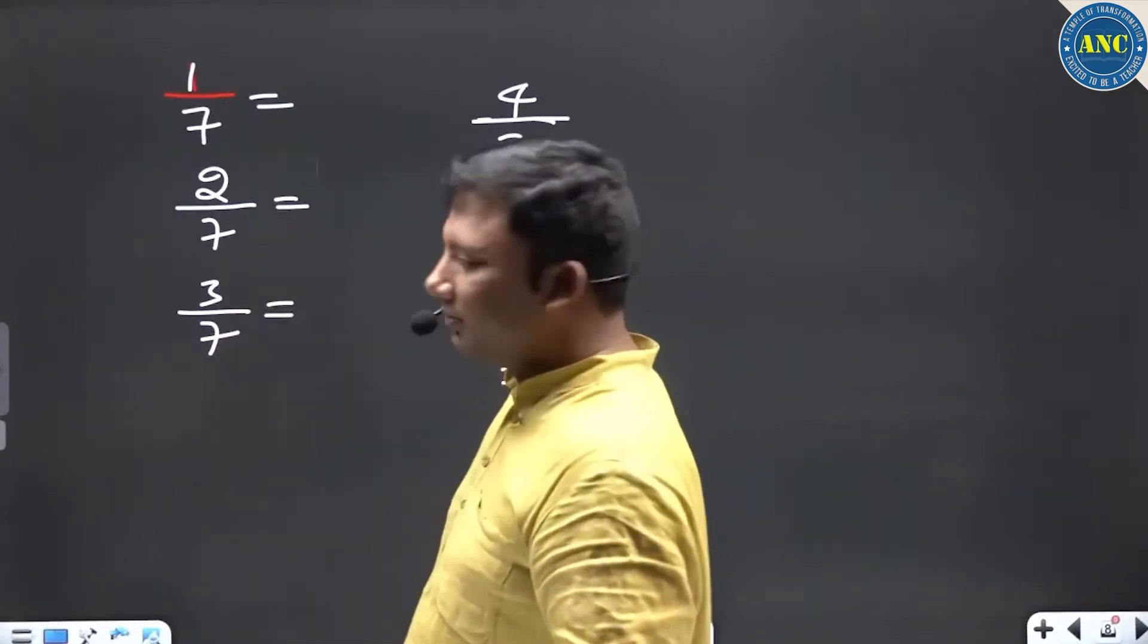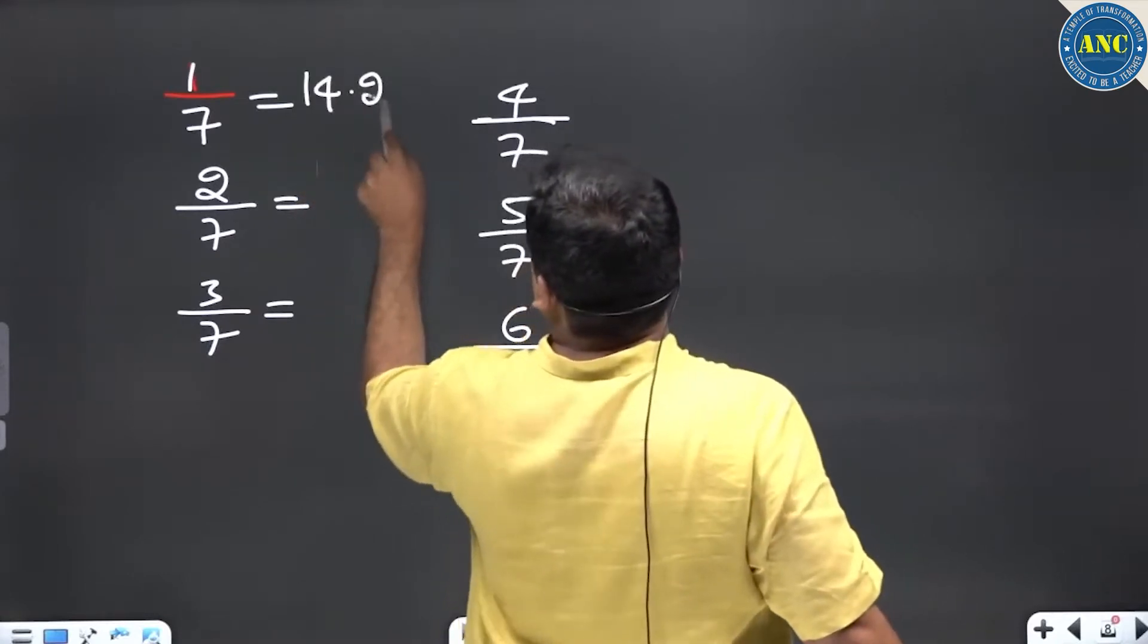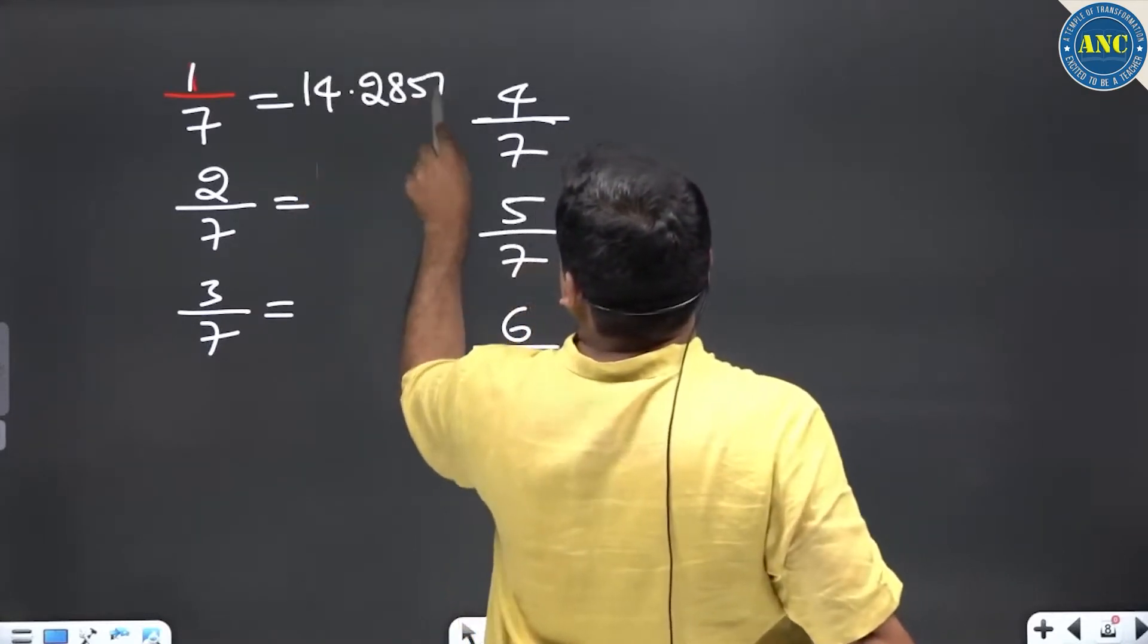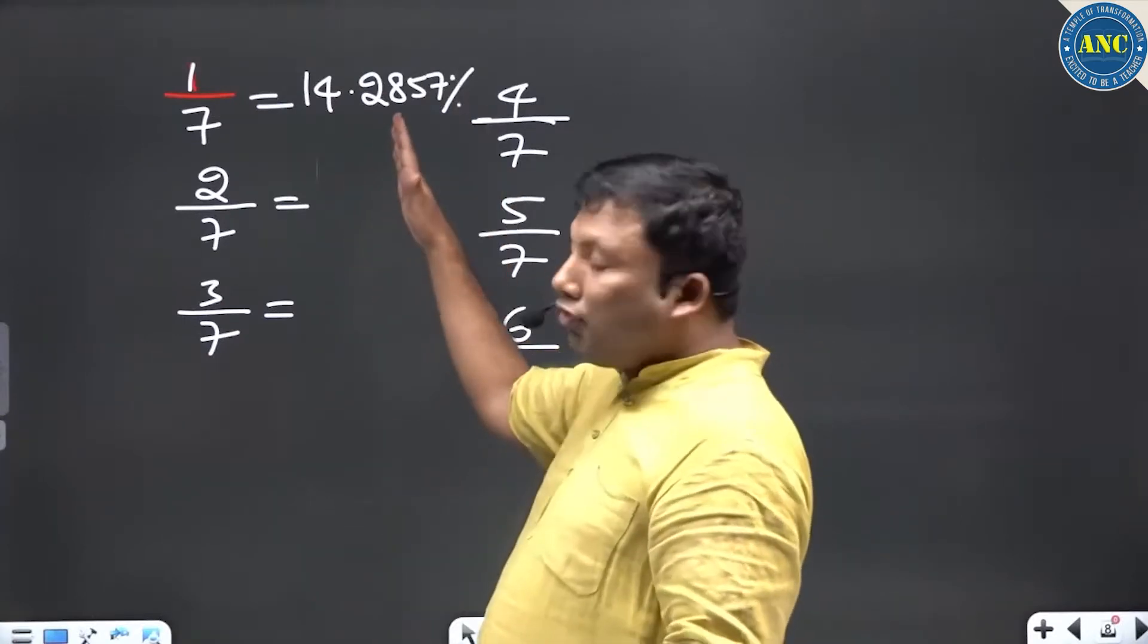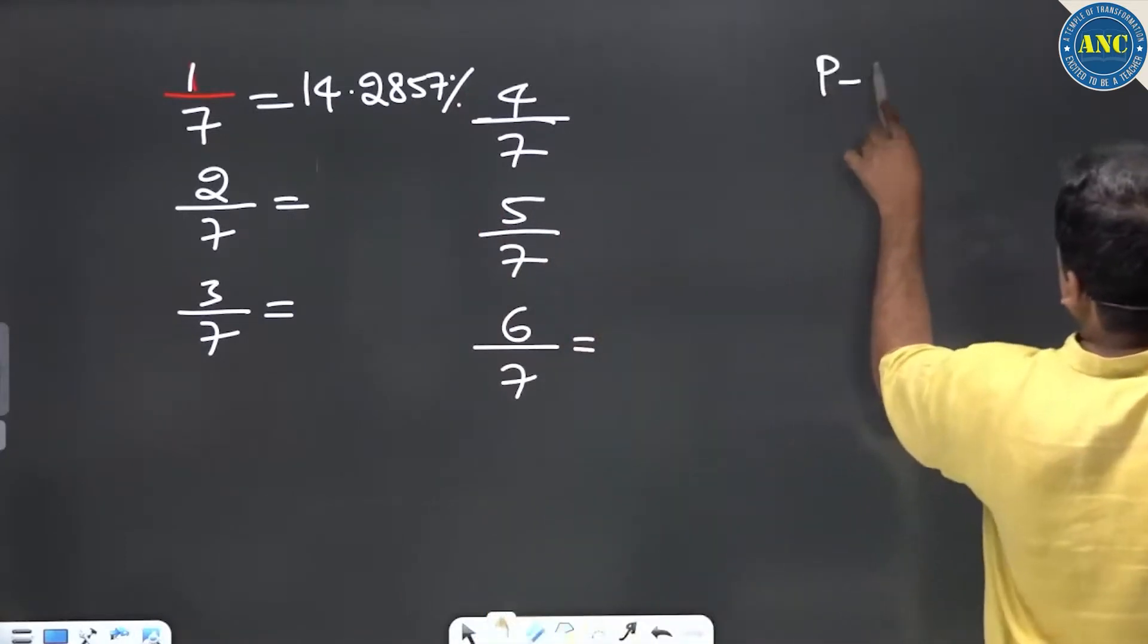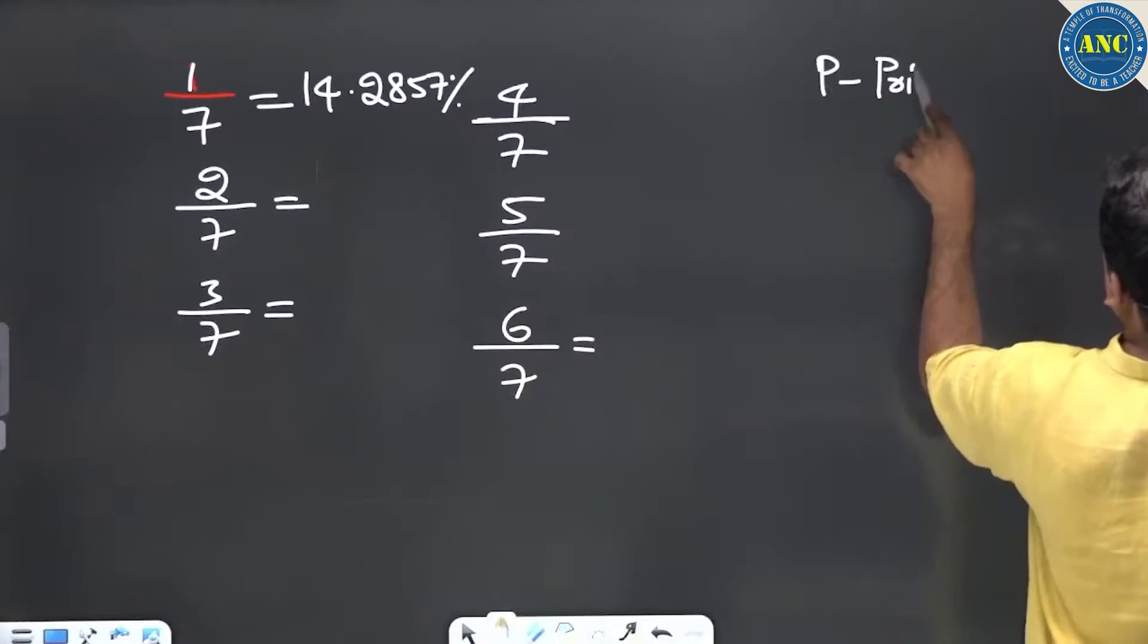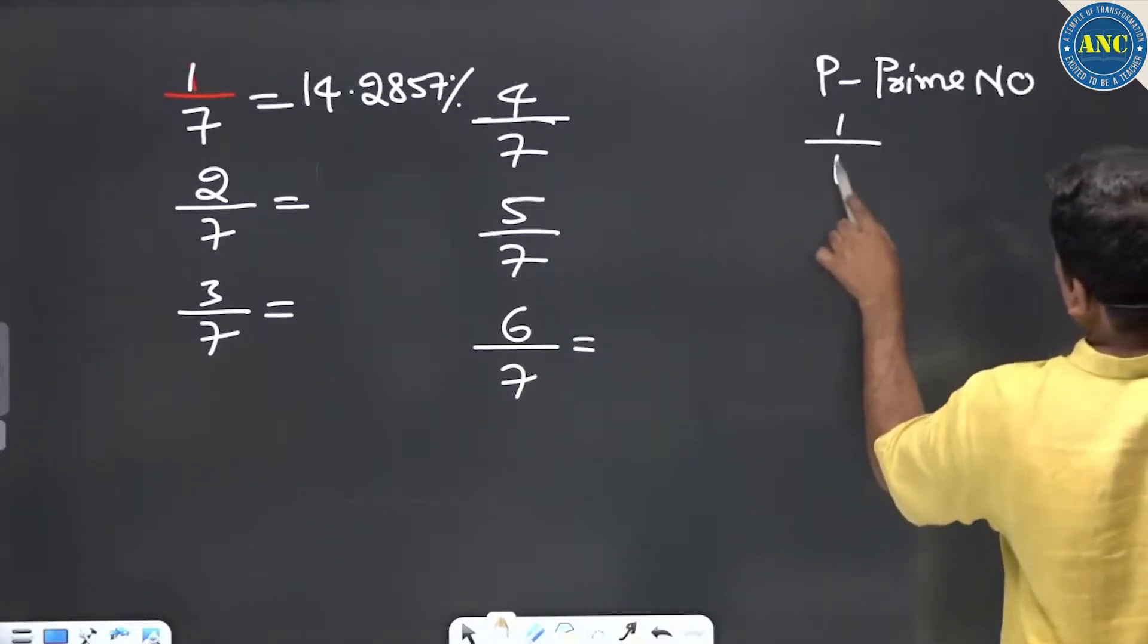Beautiful concept. For 1/7, write down 14.2857. Is there any reason why I'm writing 4 digits after decimal? Yes, there is a reason. Please write down: if p is a prime number...